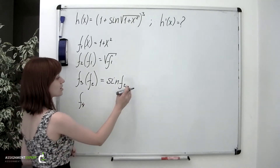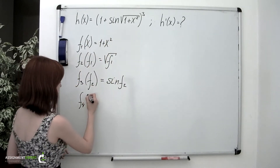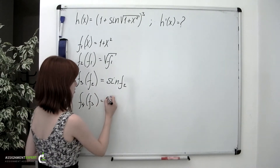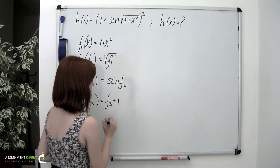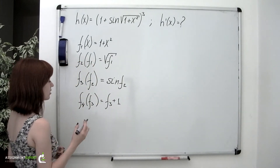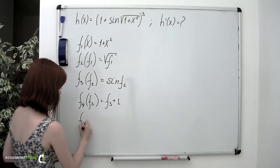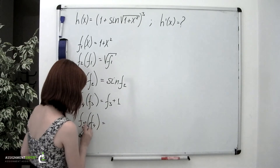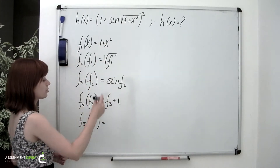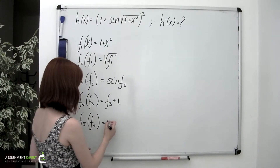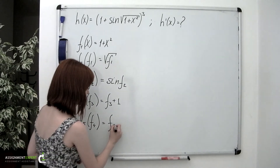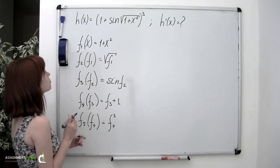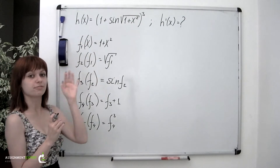Then we take this value and add 1 to it — that is our f sub 4, equal to f sub 3 plus 1. And finally, we raise that result to the third power, so f sub 5 equals f sub 4 to the third. Thus the given h of x function is a composition of 5 functions.